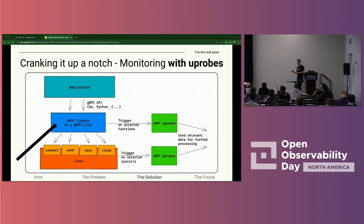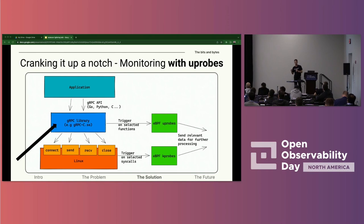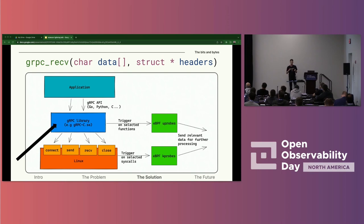eBPF also introduces u-probes — user-mode probes — which can be attached to user-mode functions, including library functions. U-probes can be used to get data directly from the gRPC library's memory. The library obviously knows that resource ID 7 represents resource Oli, otherwise it just wouldn't have worked. The server, if it didn't know what 7 was, would not know what to respond to a request for resource number 7. So using u-probes, we can get this data from the memory of the library. If there was a gRPC receive function inside the library that received both the headers and the data as arguments, we would probe it and see all the incoming information we would like. We would only need two probes — one for this function and one for the complementary gRPC send function — and we would be done.